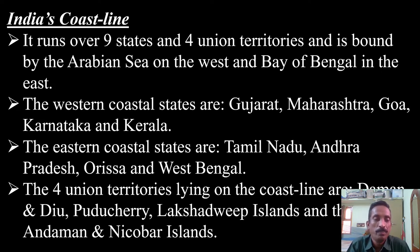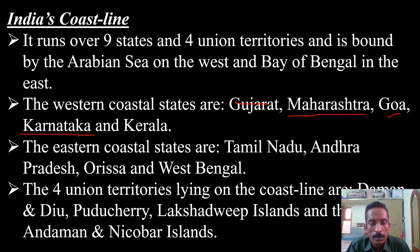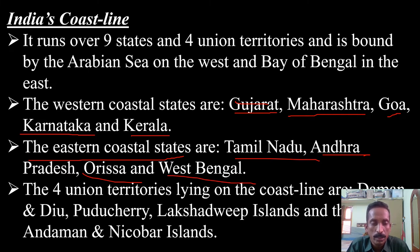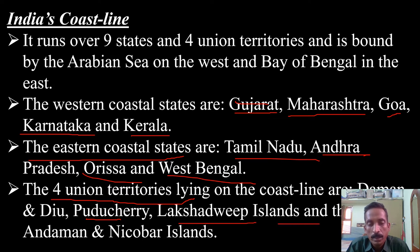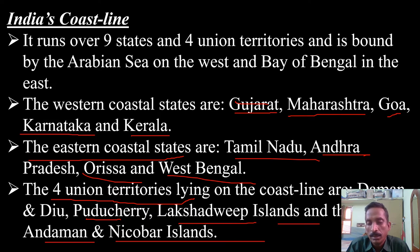The western coastal states are Gujarat, Maharashtra, Goa, Karnataka, and Kerala — five states in total. The four union territories lying on the coastal line are Daman and Diu, Puducherry, Lakshadweep Islands on the western side, and Andaman and Nicobar Islands on the eastern side in the Bay of Bengal.